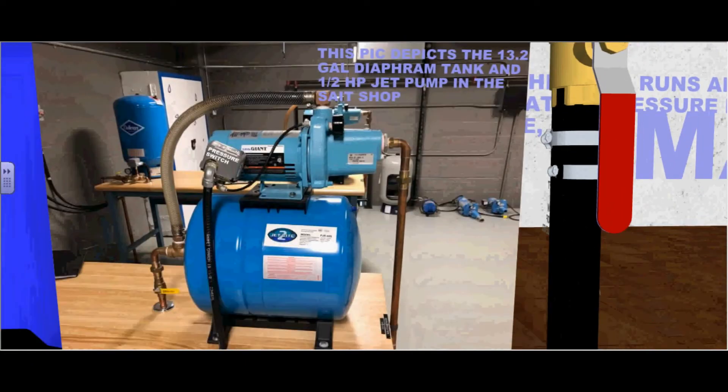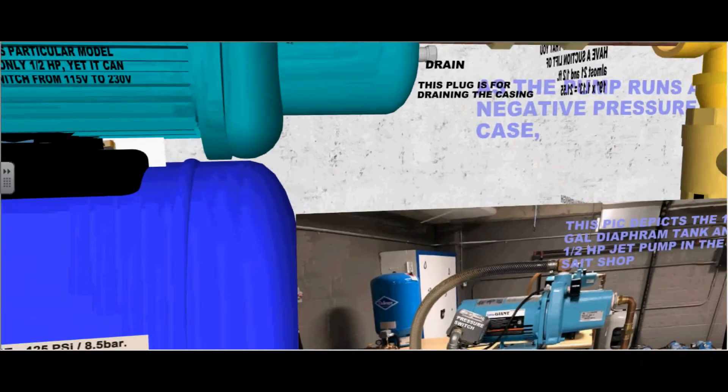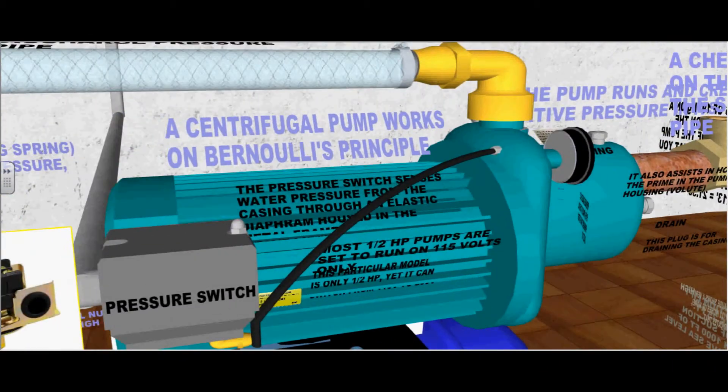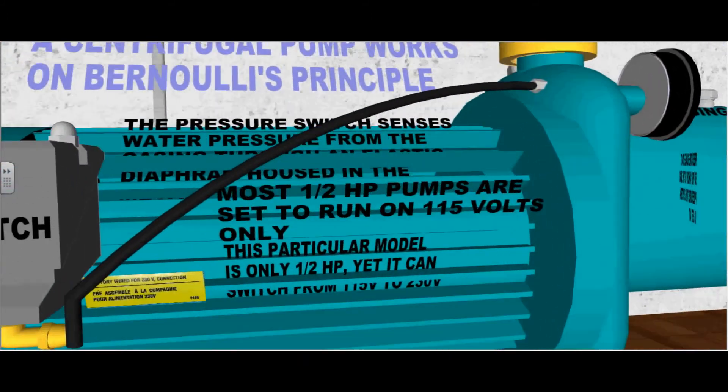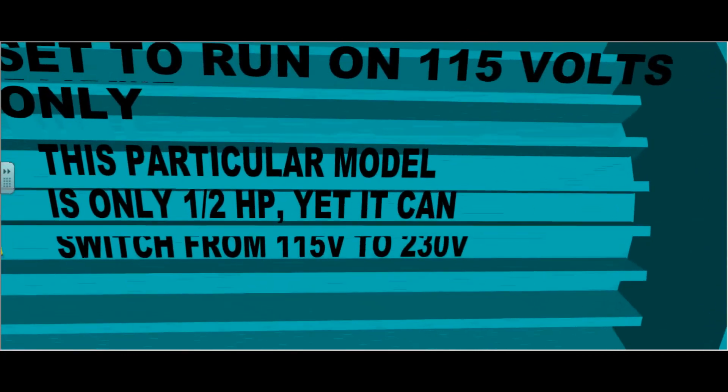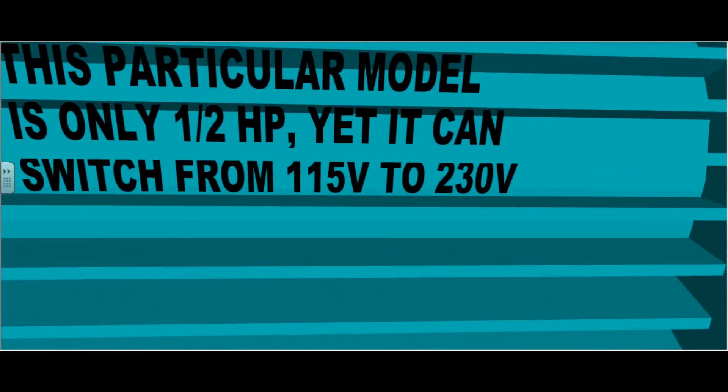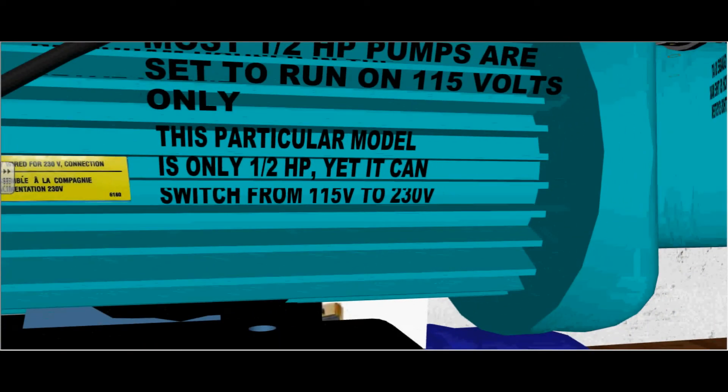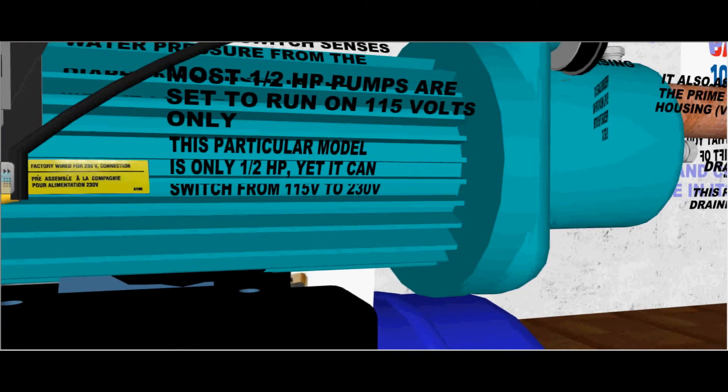This picture depicts the 13.2 gallon diaphragm tank and half horsepower jet pump in our sage shop. A centrifugal pump works on Bernoulli's principle. Most half horsepower pumps are set to run at 115 volts. This particular model is only a half horsepower, yet it can switch from 115 volts to 230 volts as illustrated on the factory wired stamp.